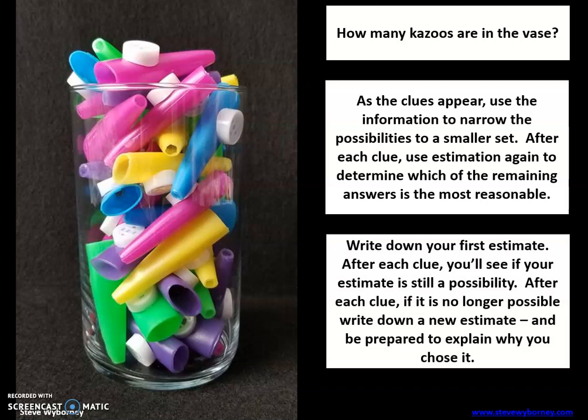Write down your first estimate if you haven't done so already. After each clue, you'll see if your estimate is still a possibility. After each clue, if it is no longer possible, write down a new estimate and be prepared to explain why you chose it.